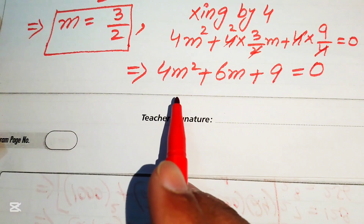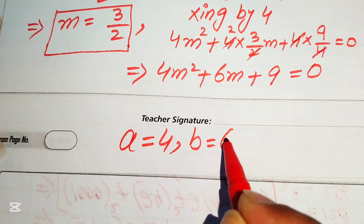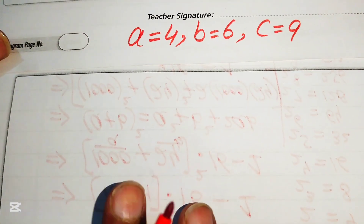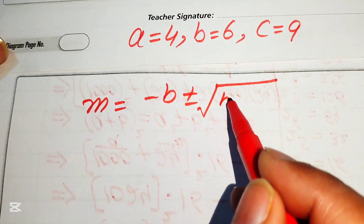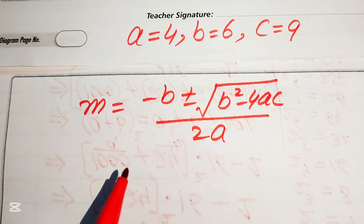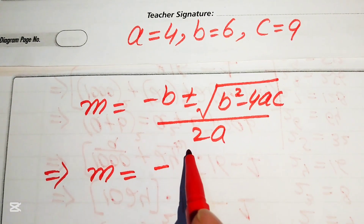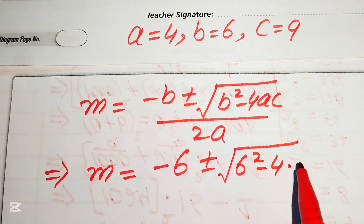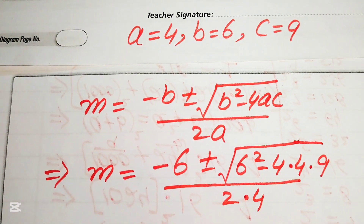To solve this using the quadratic formula, we identify the coefficients: a = 4, b = 6, c = 9. The quadratic formula is m = (−b ± √(b² − 4ac)) / (2a). Substituting: m = (−6 ± √(6² − 4·4·9)) / (2·4).